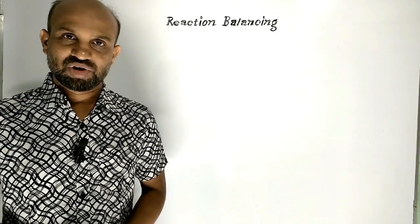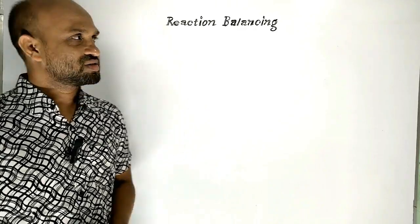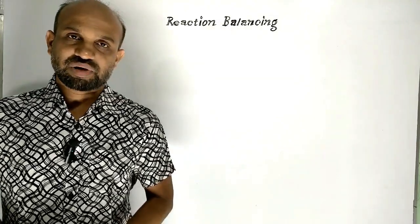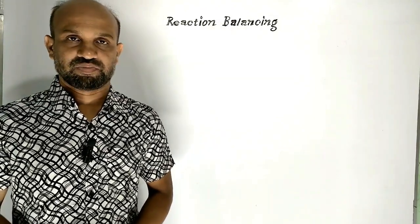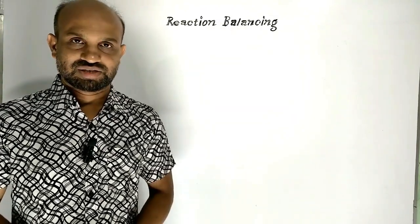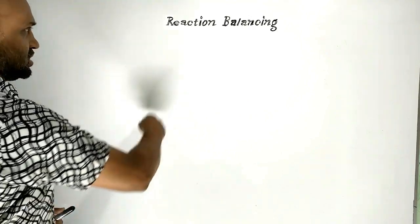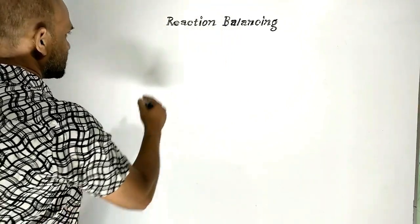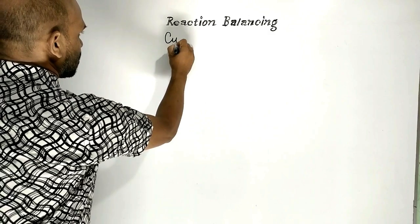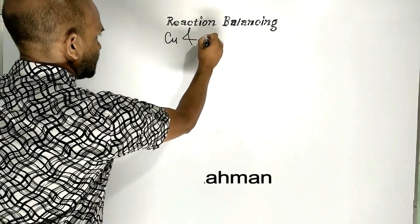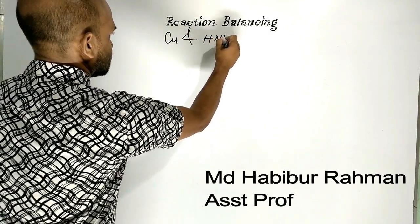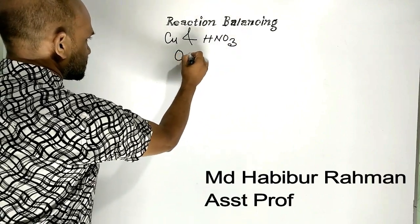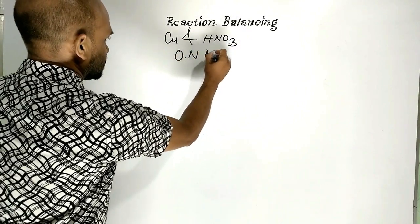Today I am going to discuss reaction balancing — reaction balancing by the oxidation number method. Let's go into the detail. We will look at the reaction of copper and nitric acid balanced by the oxidation number method.